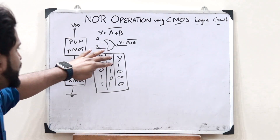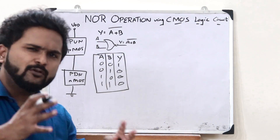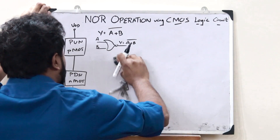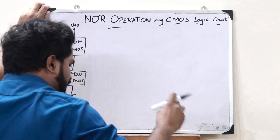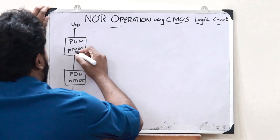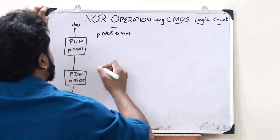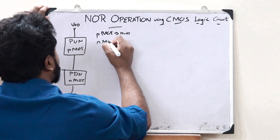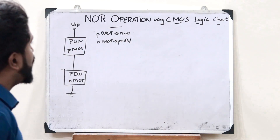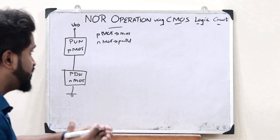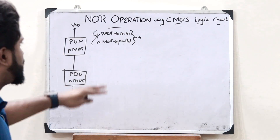We have to achieve these outputs when we design a CMOS logic circuit. We have seen that when performing an OR operation, all the PMOS transistors must be in series, whereas all the NMOS transistors must be in parallel. In such a scenario, we can achieve an OR operation. This is the condition for an OR operation. Now let us put that into effect.